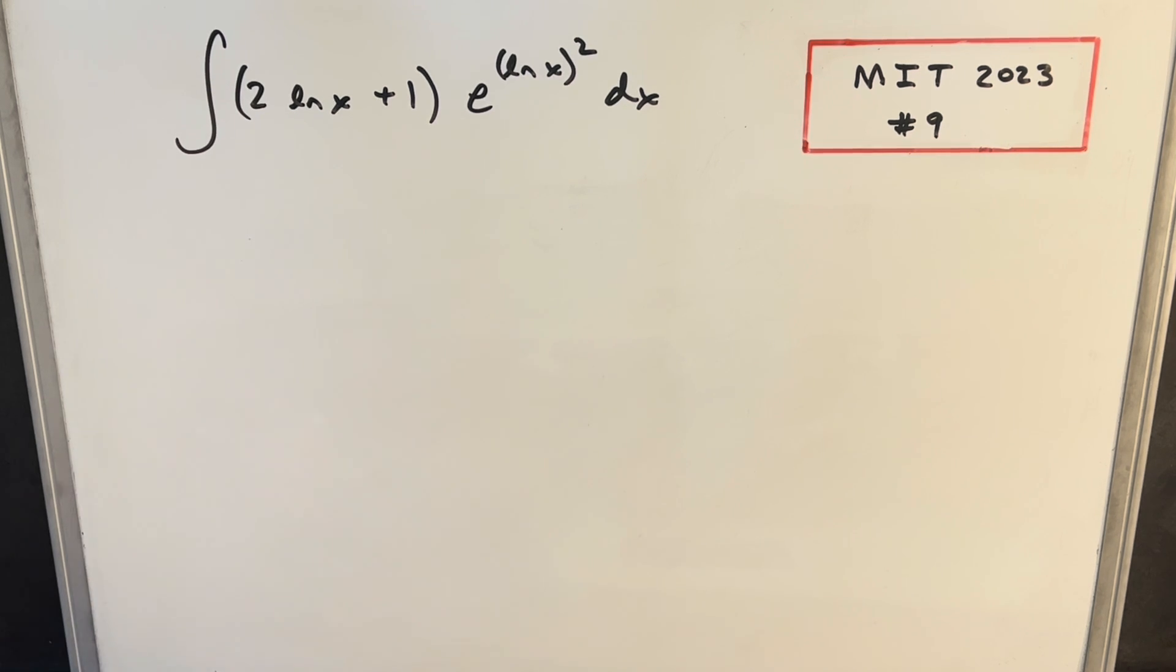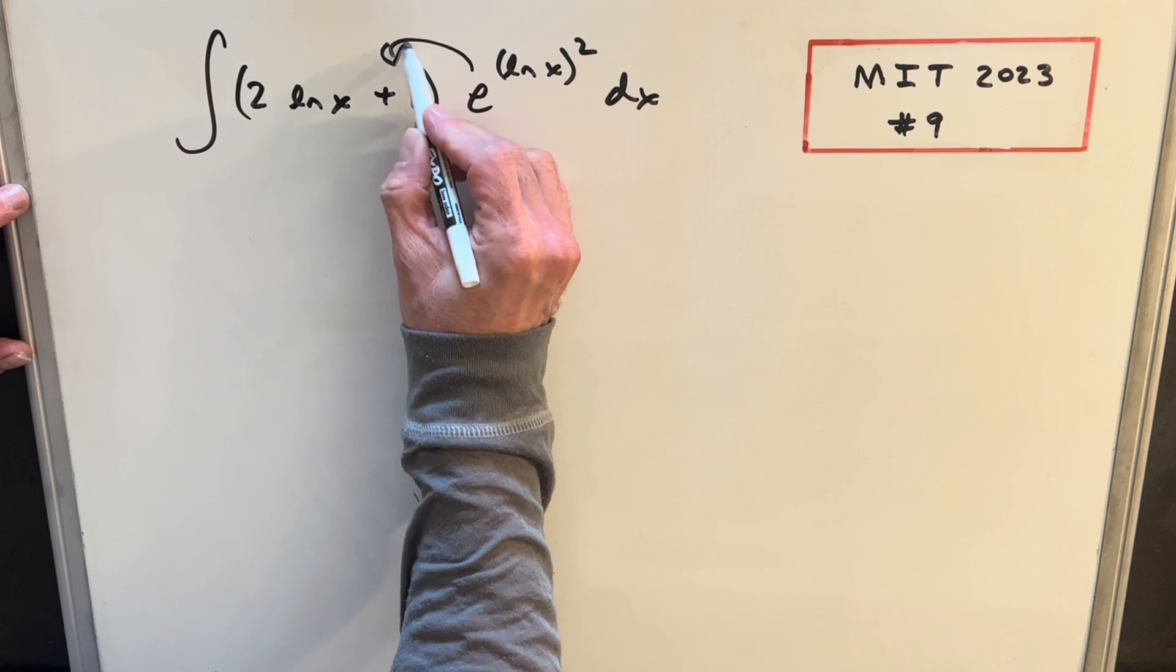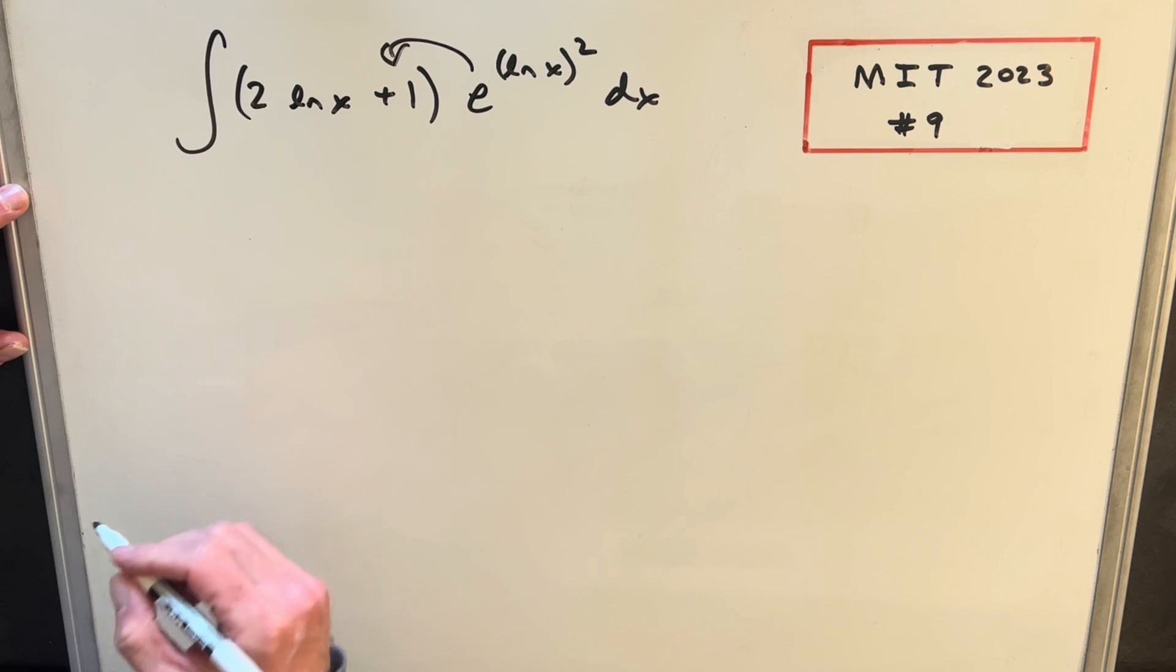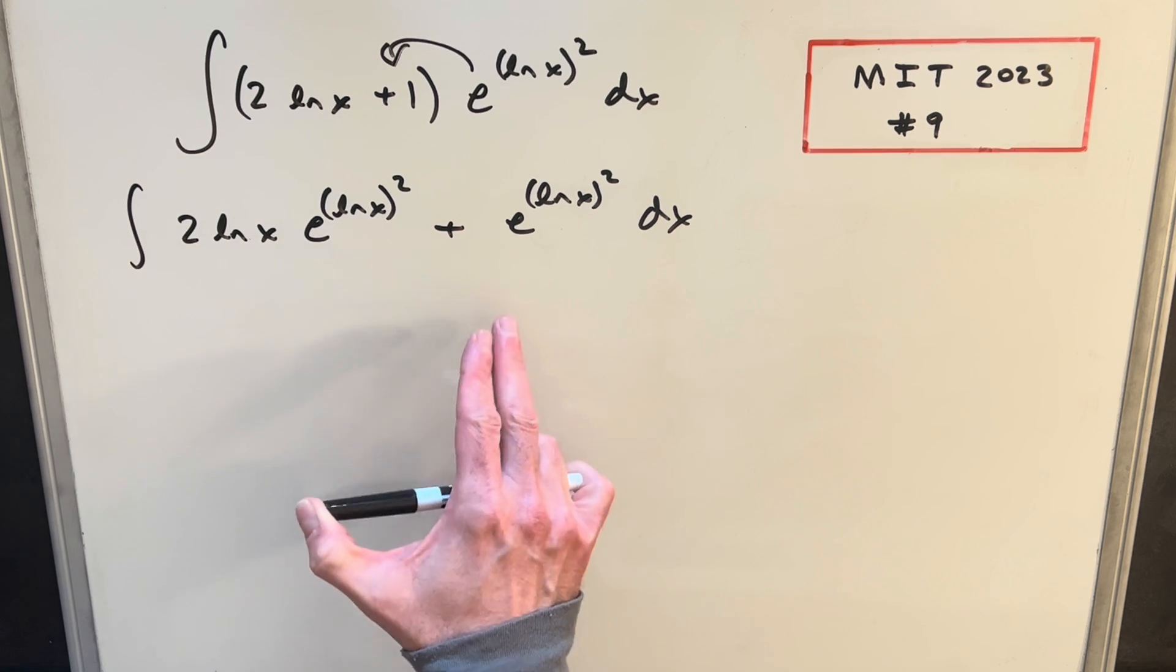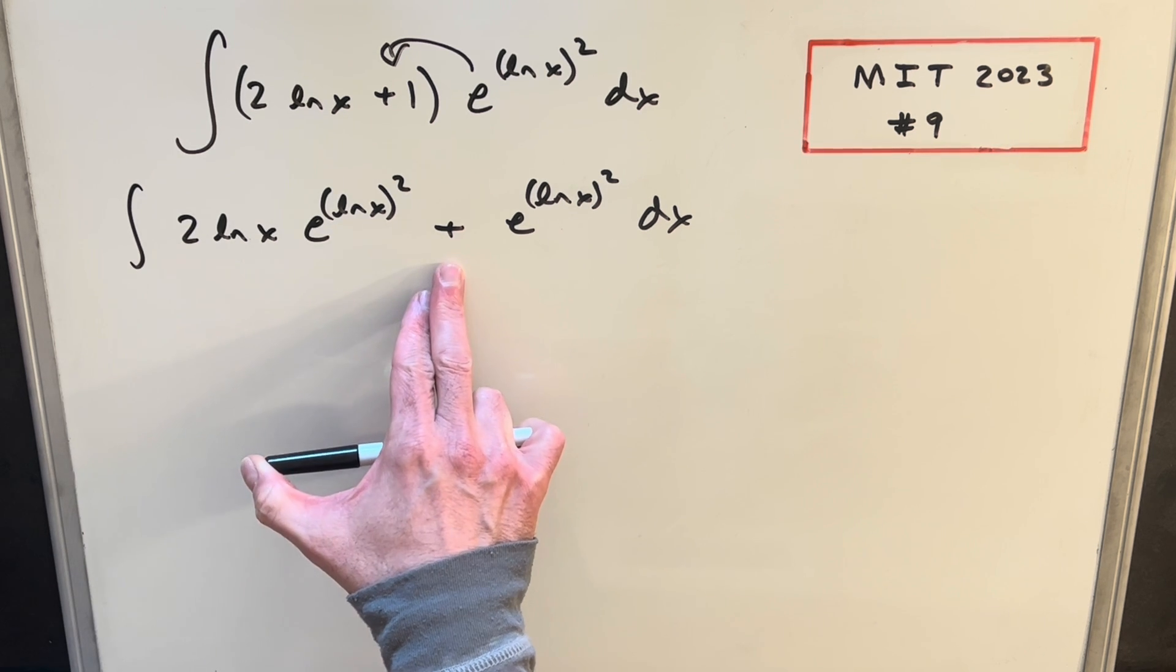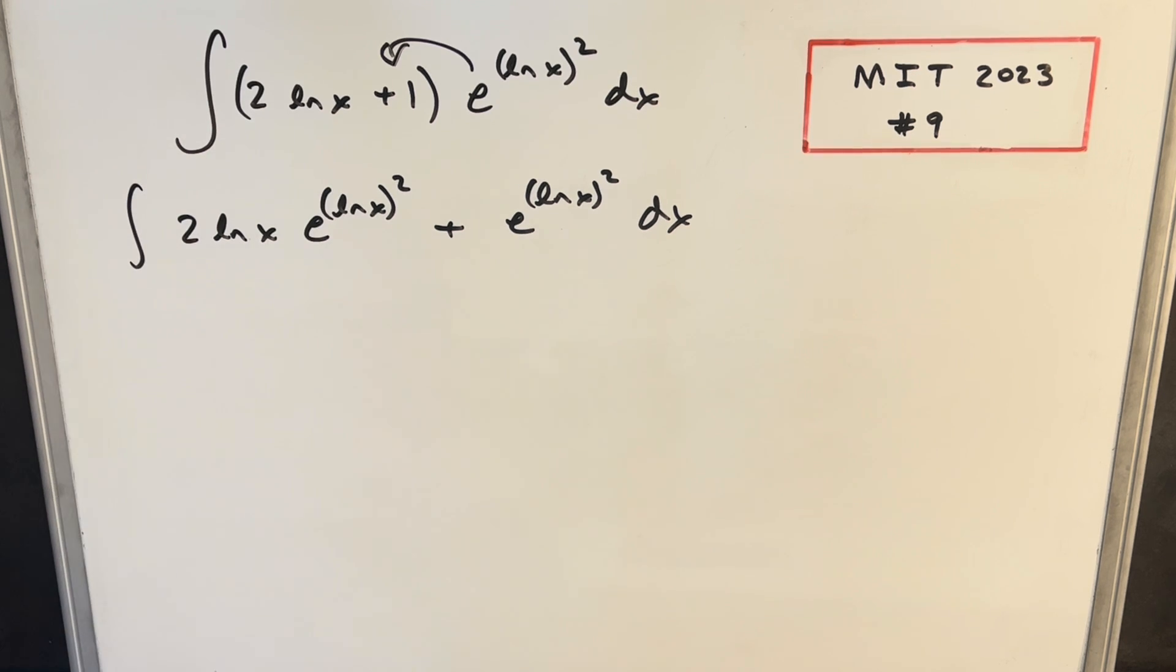Well, what I want to do to start is I'm just going to actually distribute this, create two terms, and see what we have. I like to do that first because it gives me a little better perspective on what we're looking at. The addition tells me a couple things. It says clearly we can split this into two integrals with the addition separating these two.